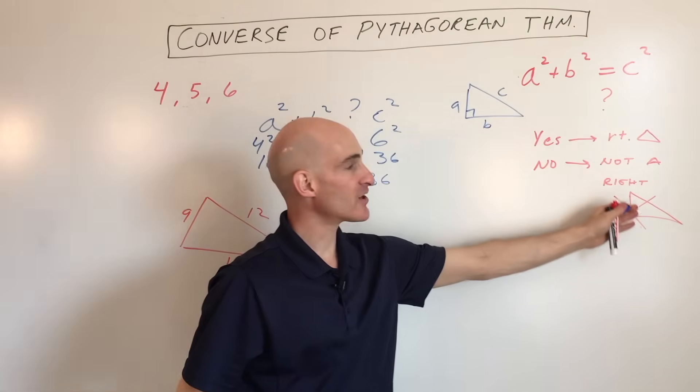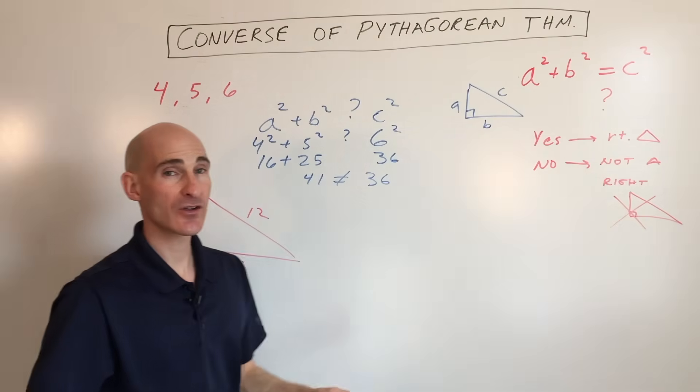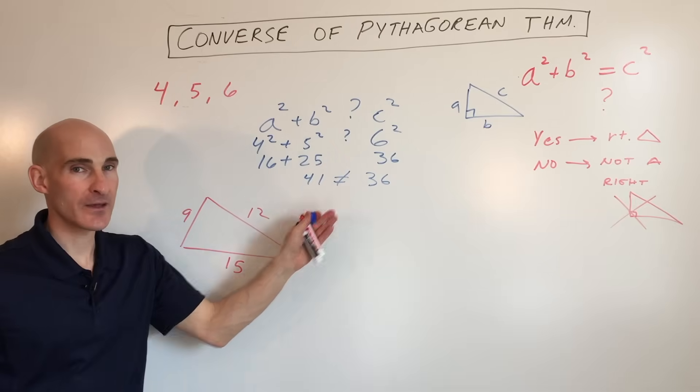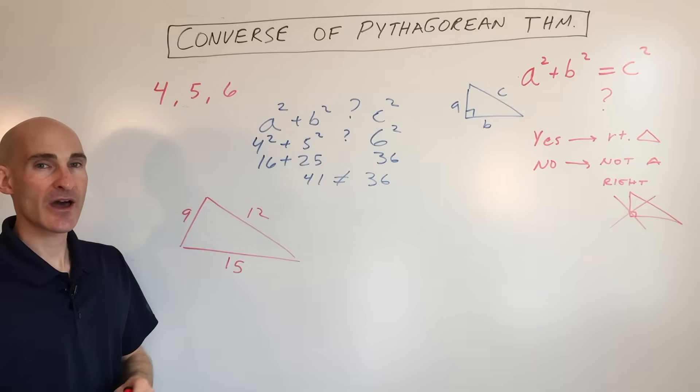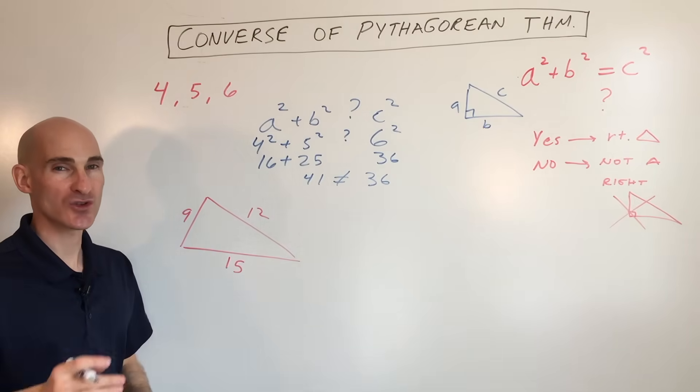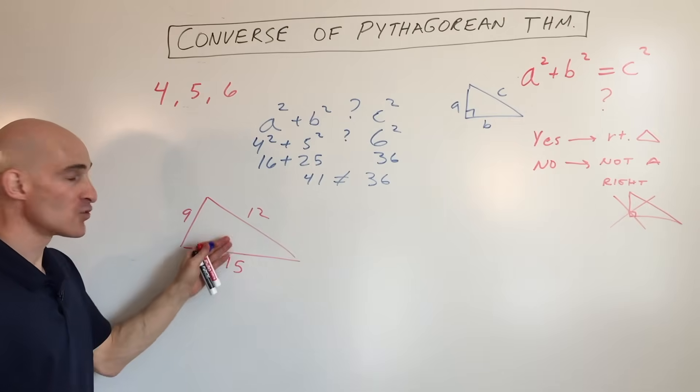So that means that it's not a right triangle. It does form a triangle. It's just not a right triangle. Okay, in the next video, I'm going to show you how to tell whether it's acute, right, or obtuse. So check out that video. But let's do one more example.